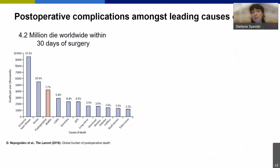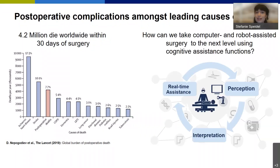Let me start with some numbers you might not be aware of. Most operative complications are amongst the leading causes of death. A recent Lancet comment shows that approximately 4.2 million people die worldwide within 30 days of surgery, and a lot of this is related to surgical error. The challenge we face is how can we take computer and robot-assisted surgery to the next level to enhance surgeries and reduce complications by using artificial intelligence and cognitive assistance functions.